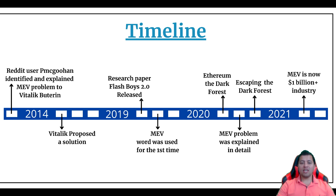It's basically how much ETH a special miner account or a special validator account can extract, given a set of user transactions with an initial state and a set of contracts, by inserting own transactions, censoring user transactions, and then reordering them. In other words, it refers to profits that can be made by extracting value from Ethereum users by reordering, inserting, or censoring transactions within blocks being produced.